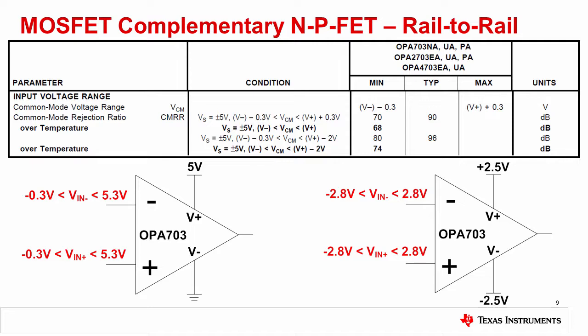The example on the right gives a split supply configuration where the input can range from minus 2.8 volts to plus 2.8 volts.